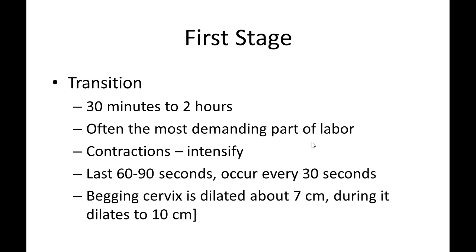During transition, contractions intensify, lasting 60 to 90 seconds and occurring every 30 seconds. The cervix dilates from about 7 centimeters to 10 centimeters. To summarize: early labor reaches about 3 centimeters, active labor continues to about 7 centimeters, and transition goes from 7 to 10 centimeters — with contractions that are much stronger and intensified.